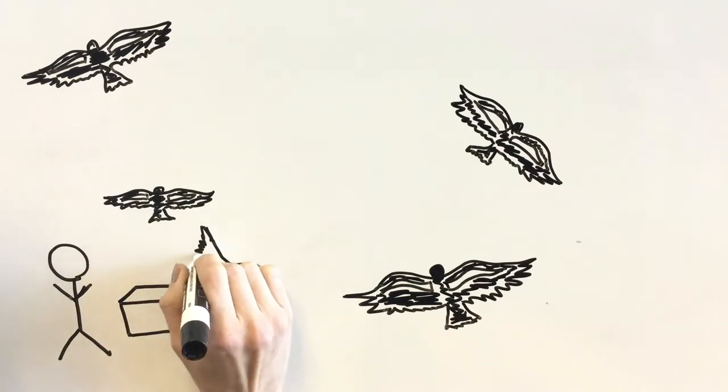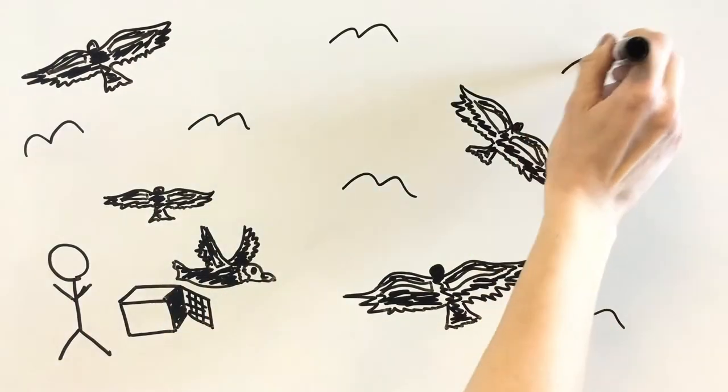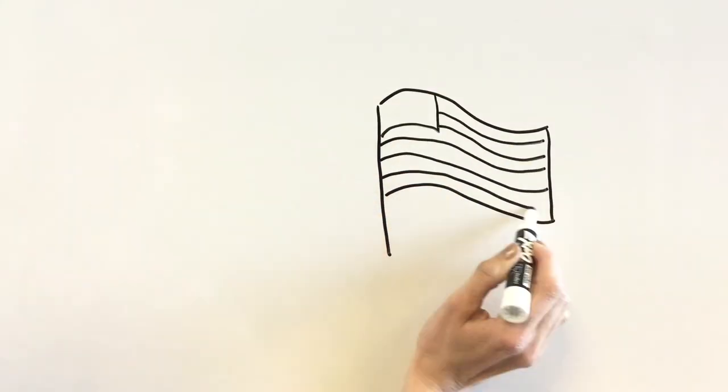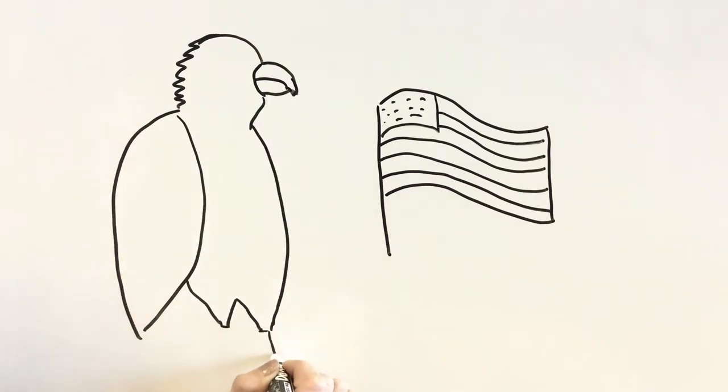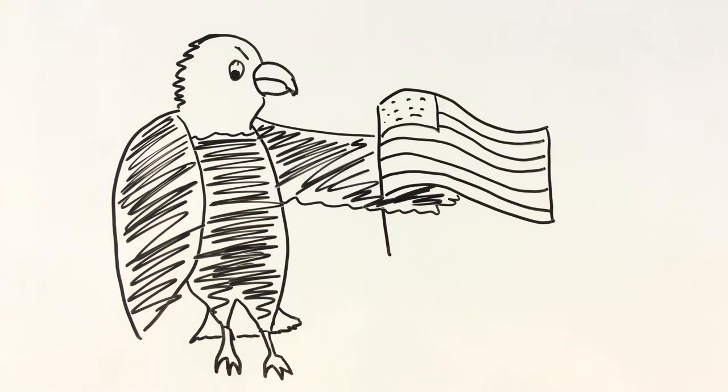Thanks to a big conservation effort, there are now more than 400 condors living in California and Arizona. But lead poisoning continues to be a problem, not just for condors, but for other birds that scavenge on dead animals as well, including our national symbol, the bald eagle.